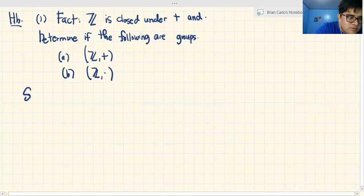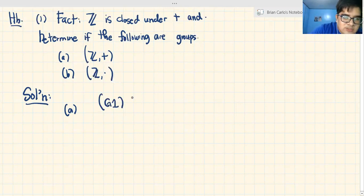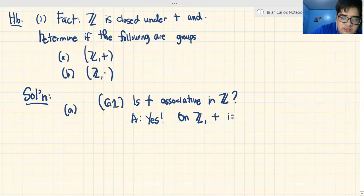Now, solution. Let's start with A. Determine if they are groups, meaning we need to check the three properties. G1. The question is: is addition associative in Z? Answer: Of course, yes. On Z, addition is indeed associative. We know that. We don't need to verify this.